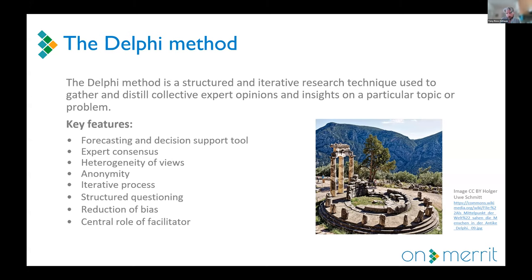The picture here is the Temple of Apollo in Greece, where the Oracle of Delphi sat — a high priestess known for insight, wisdom, and especially for making good predictions about the future. The Delphi method emerged in the mid-20th century especially as a forecasting tool.